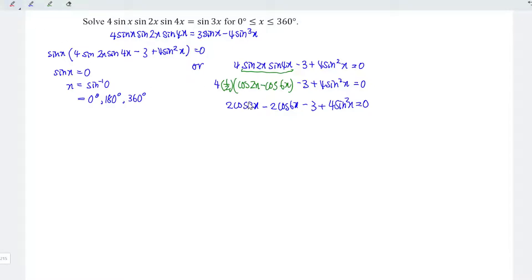Next, I'm going to apply the double angle identity for this term. So we have 2 times 1 minus 2 sine square x minus 2 cos 6x minus 3 plus 4 sine square x is equal to 0. From here, we can see that we have 2 times minus 2 sine square x is minus 4 sine square x. And we have plus 4 sine square x, so which means that they should eliminate each other.